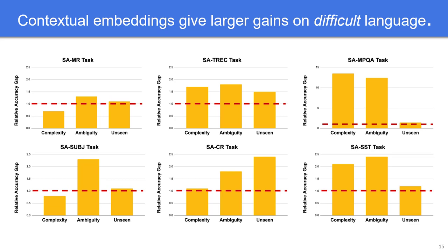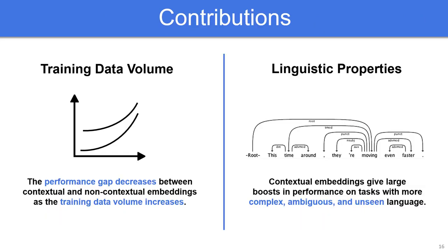Note that while NER is a word-level classification task, in our paper we additionally defined metrics for sentence classification tasks and show similar results on six popular sentiment analysis tasks. To recap, our studies show that contextual embeddings tend to give large boosts in performance in data-poor regimes and when the task contains more structurally complex, ambiguous, and unseen language. We hope this work inspires future research on better understanding the differences between embedding methods and on designing simpler and more efficient models. Thank you.